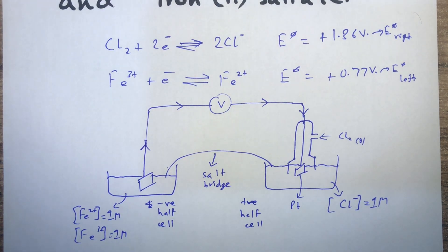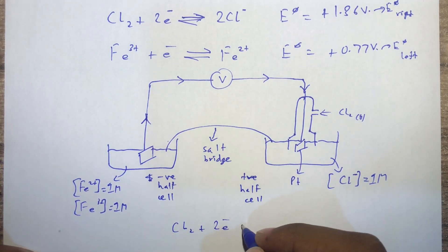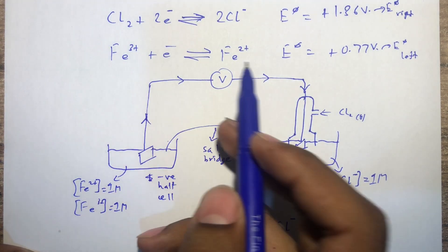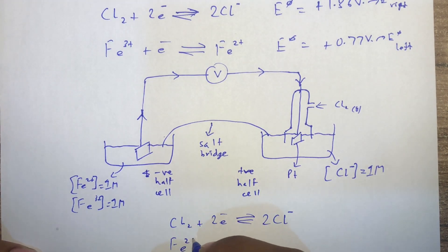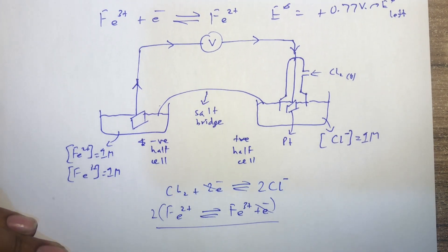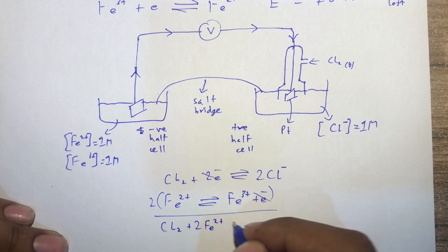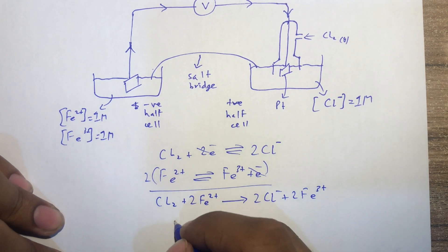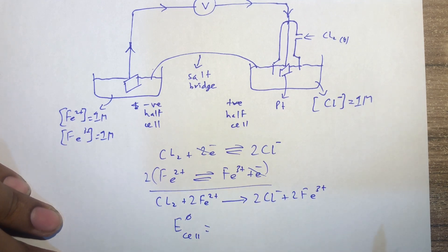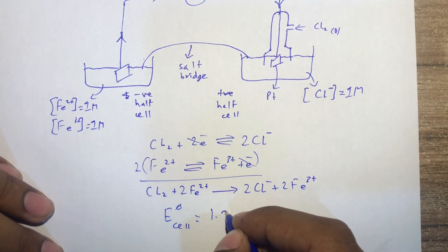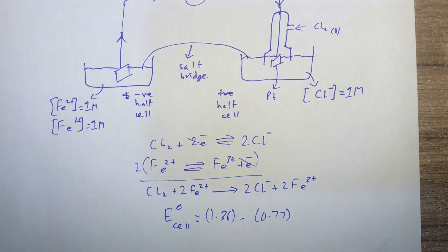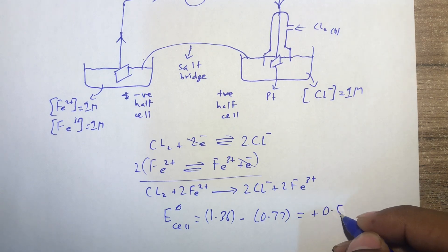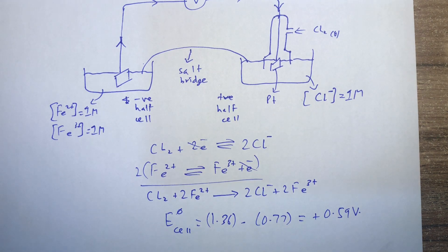Since chlorine has a more positive SCP value, its equation is written as is. Iron has a less positive SCP value so its equation is flipped. Multiplying by two to cancel electrons gives the overall equation: Cl₂ + 2Fe²⁺ → 2Cl⁻ + 2Fe³⁺. E°cell = E°right − E°left = 1.36 − 0.77 = +0.59 V. This is positive so the reaction is feasible, and it's greater than +0.3 V so the reaction goes to completion.